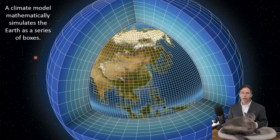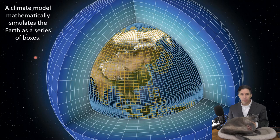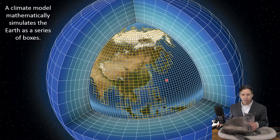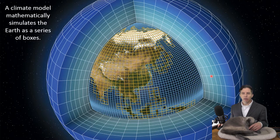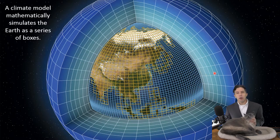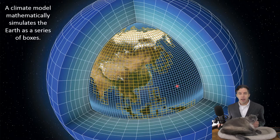One of the topics they talked about in your book was this idea of a climate model. A climate model is really a computer program — a very complicated one. The way we think about it is: imagine if we took all of the ocean and broke it up into little cubes, then took the surface of the land and broke it up into little squares, and then took all of the atmosphere and broke those up into cubes.